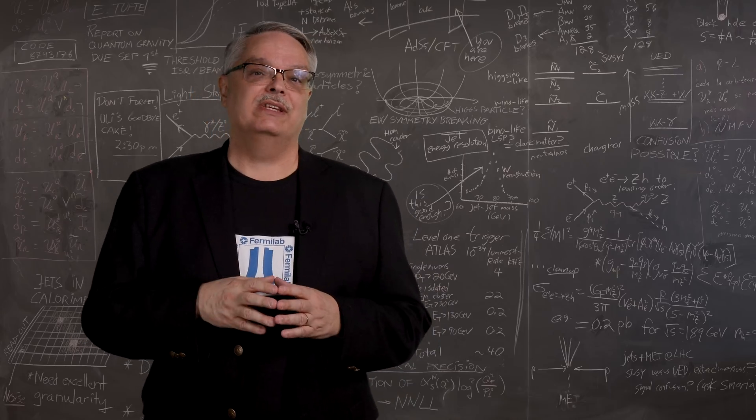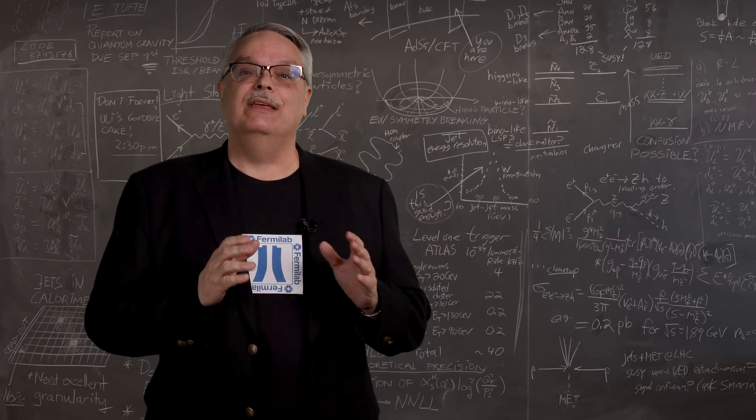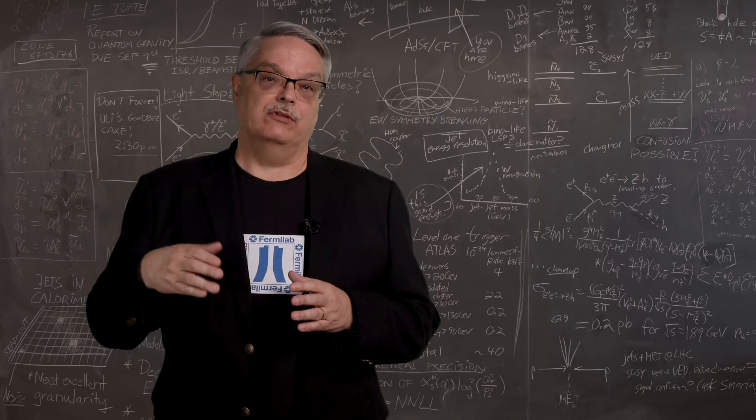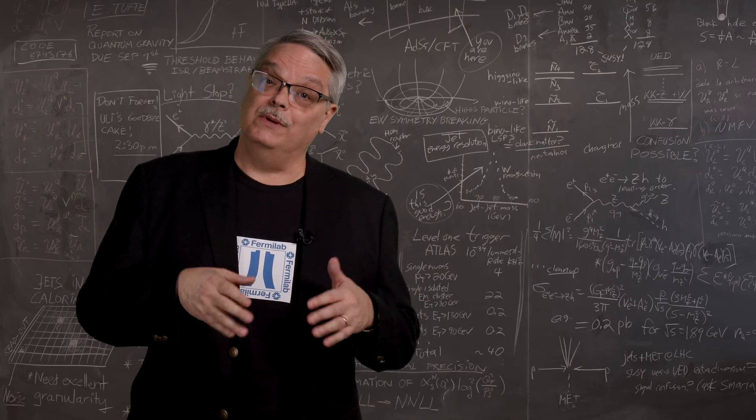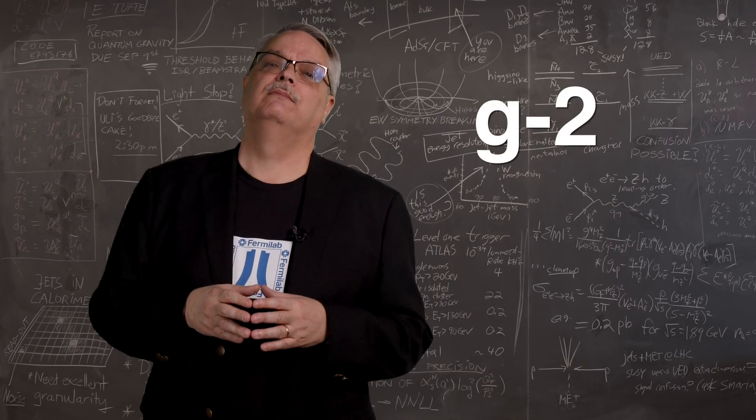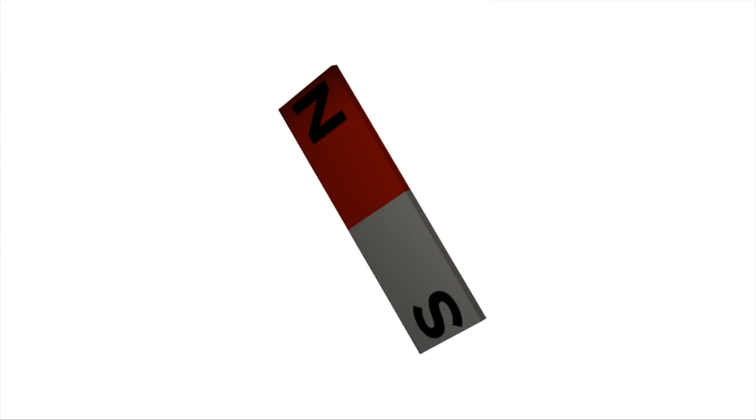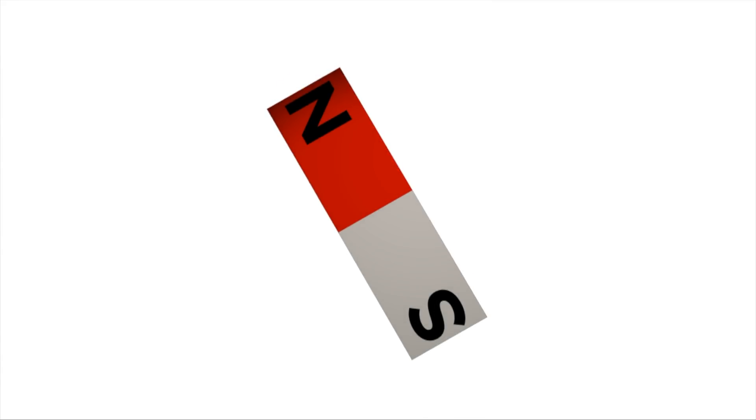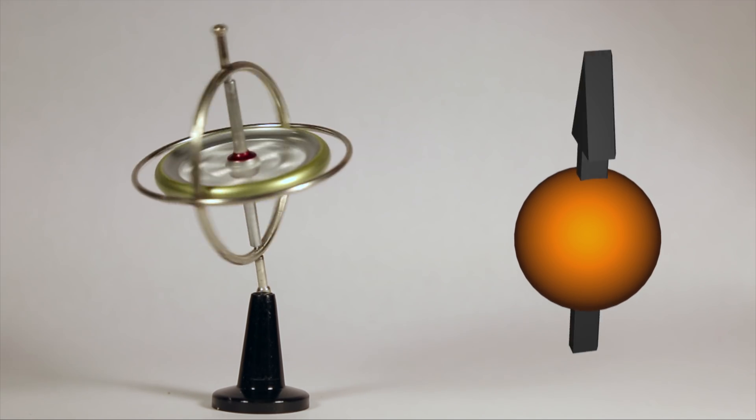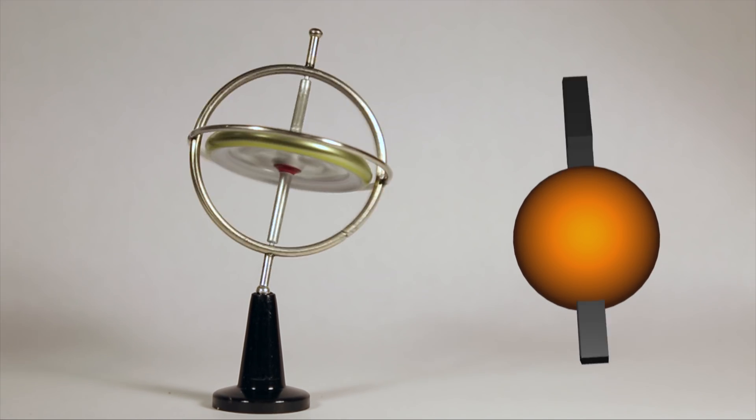Our scientists are also investigating an earlier measurement that might be the best prospect for discovering new physics. This experiment is called G-2. Almost all subatomic particles act as if they're spinning. Those particles that also have electrical charge combine that with the spin and the result is that they act like magnets. And if you put a magnet in an external magnetic field, the magnets will precess like a top. That's just what they do.